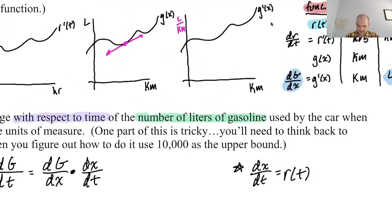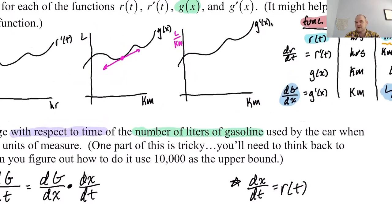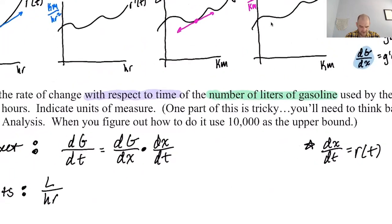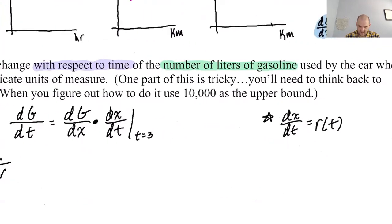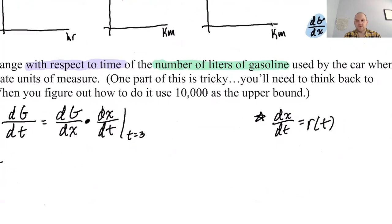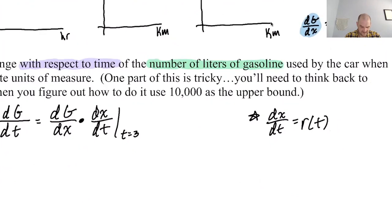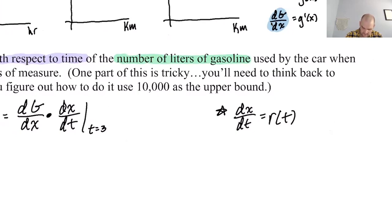So dg dx is a thing we can directly find, right? That's g prime of x, not a problem. What is a problem is that we are interested in this when t equals 3. Okay, well, I'll definitely be able to find r of 3 because I can just plug that in once I define it on the calculator. So I can find that. What I don't necessarily know is I need to know. So this is a new question we need to answer. I need to know what is x when t equals 3. So how far have I gone? So from t equals 0 to t equals 3, how far did I go? Because I need to take how far I went and plug that in to g prime to figure out dg dx. So now our job is to figure that out.